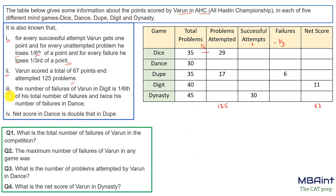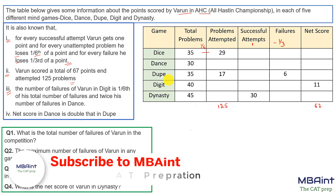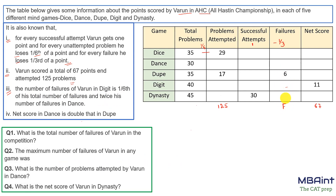The third point says the number of failures of Varun in digit is one-sixth the total number of failures. If total failures is F, then digit failures = F/6. And this is twice the number of failures in dance, so the total number of failures in dance = F/12.